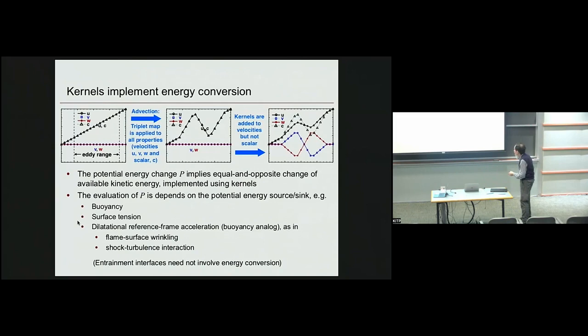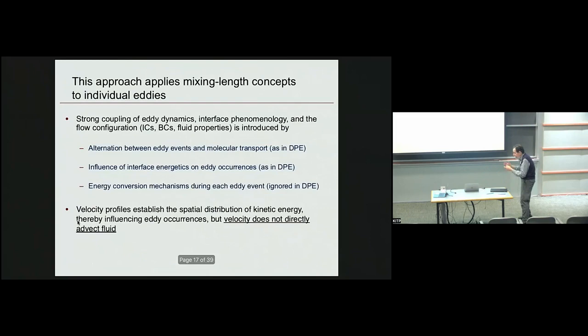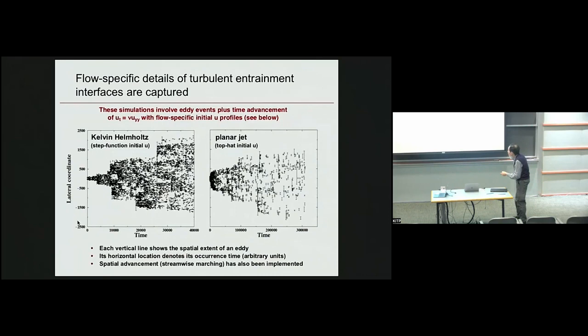The P changes implies equal and opposite change in kinetic energy. So then we have to identify the various potential energy sources and sinks associated with interfaces. And here's a list of those, and we're going to cover the individual cases. Now, just for an entrainment interface, you don't need energy conversion. You just need a turbulent region and a laminar region and an interface. The velocity does not directly affect fluid, at least not in the soil normal sense. We can have dilatation. But it does influence the occurrence of the sequence of the triplet maps. This is what I call space-time diagram. A vertical line here, that means an individual eddy occurrence, and it shows you when it occurred and the spatial range in which it occurred. It's just to give you a visual impression of what the entrainment interface looks like for a couple of free shear flows using the model.